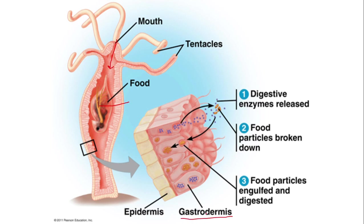Digestion is carried out by the gastrodermis layer. First, the gastrodermis layer secretes digestive enzymes into the gastrovascular cavity. These enzymes carry out extracellular digestion, breaking down the food particles into smaller pieces. Then these smaller pieces are engulfed by the gastrodermis cells again.